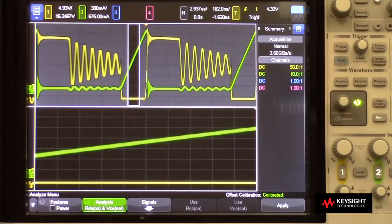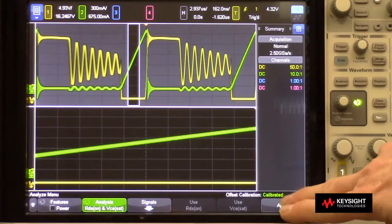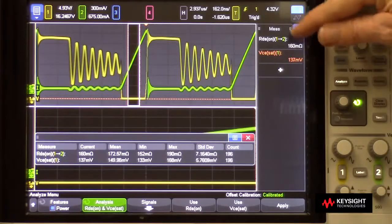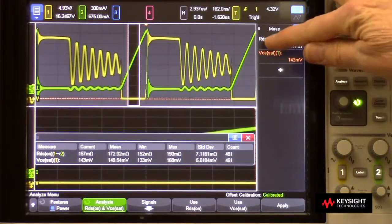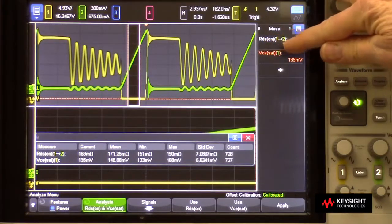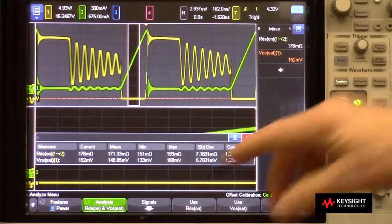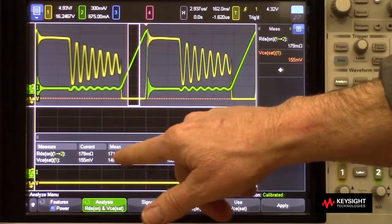And at this point we're ready to make a measurement, so all I have to do is press apply, and here I can see I've got a FET device. My effective drain-to-source resistance is about 170 milliohms. The average appears to be about 171.